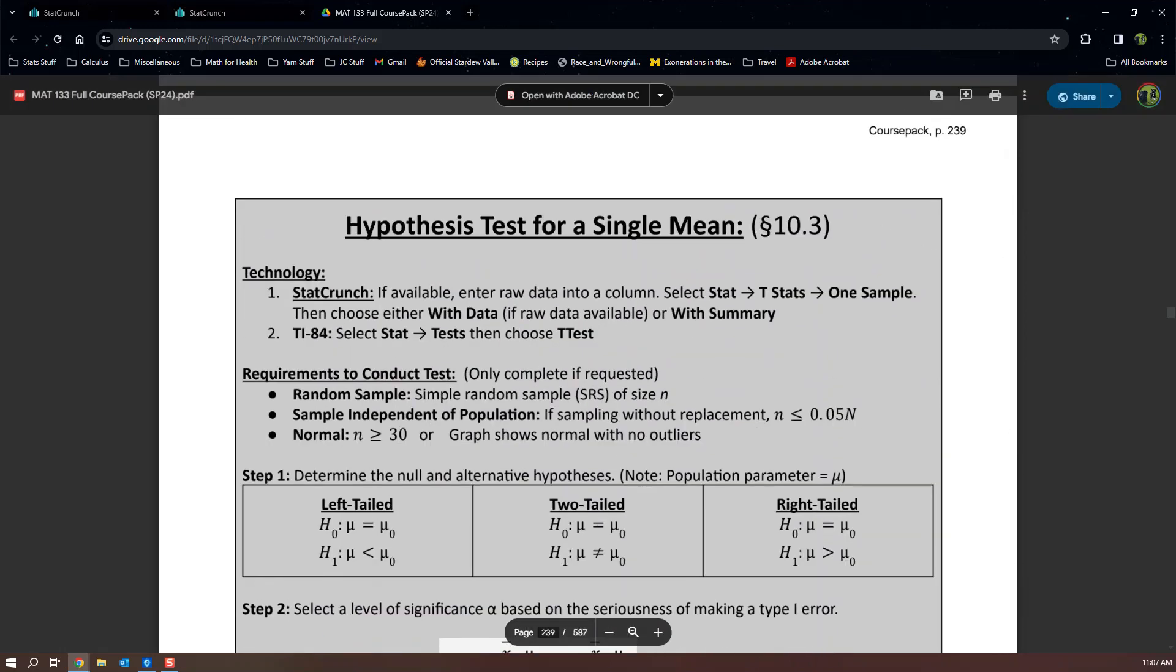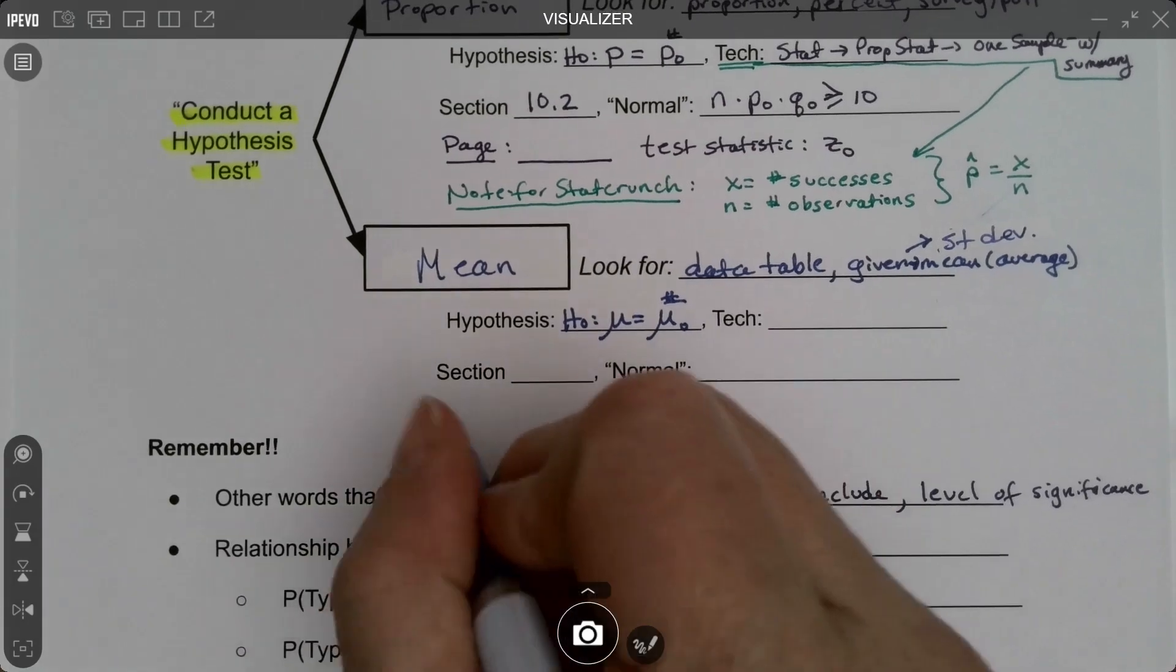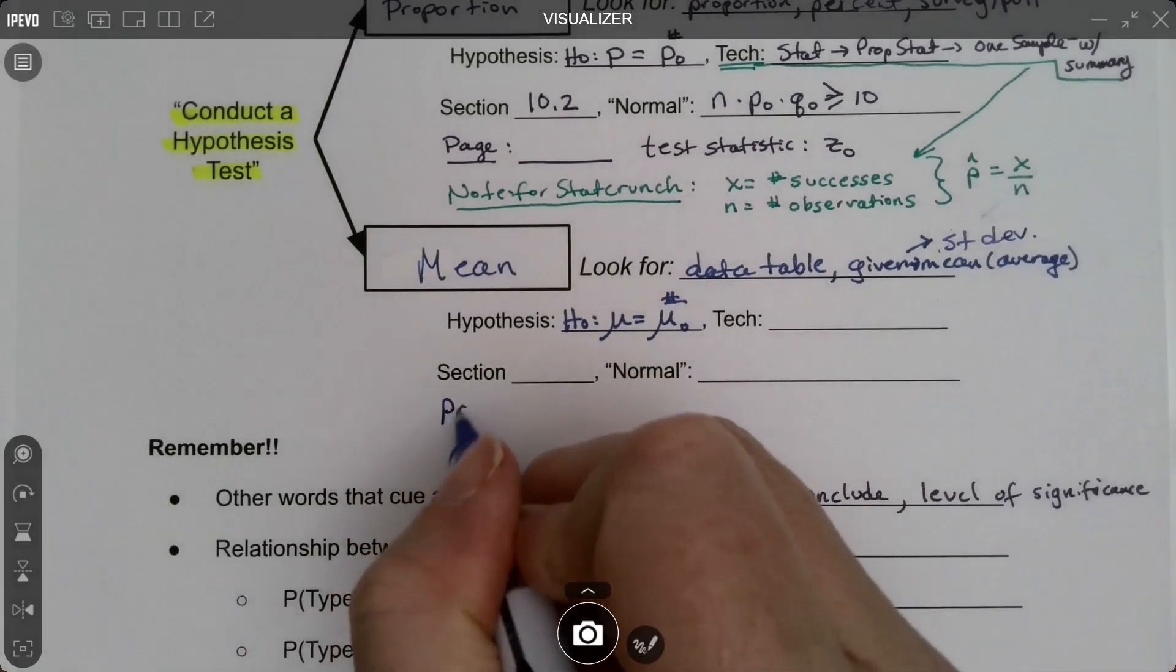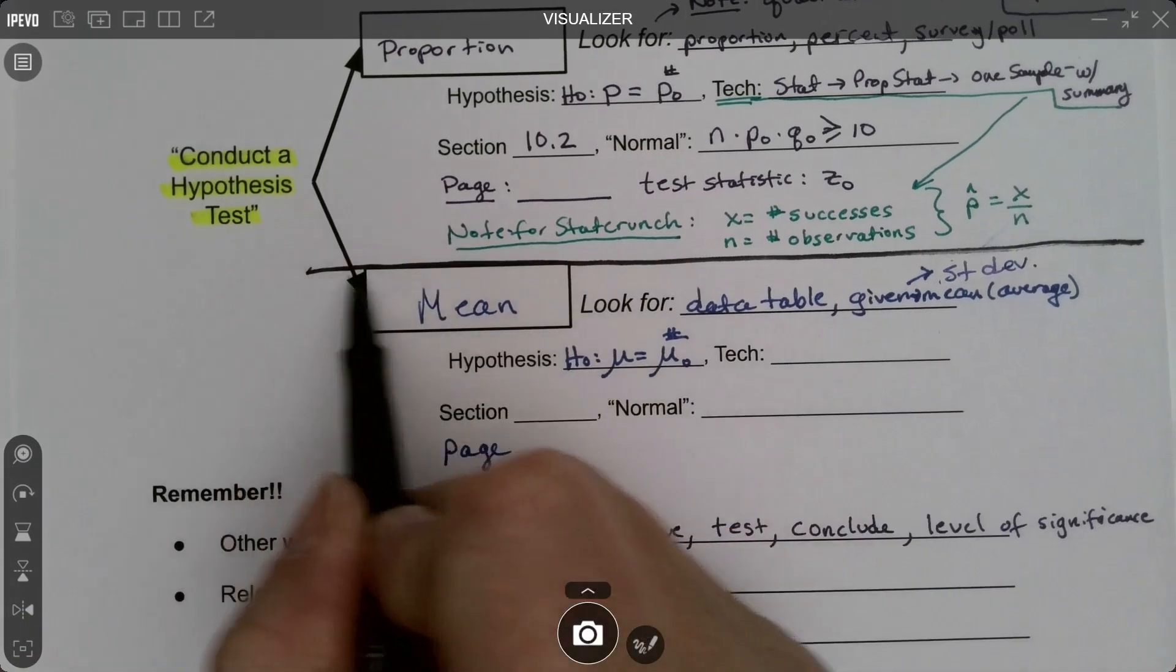For me this current semester, it's page 239, but put in whatever page it is for you. And actually, I'm going to separate these two sections just so they're real clear that they're not the same. I'll add a horizontal line.